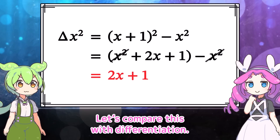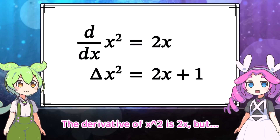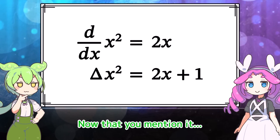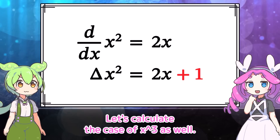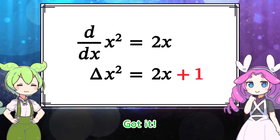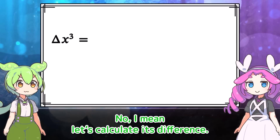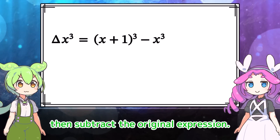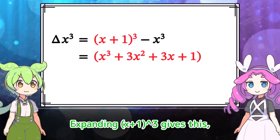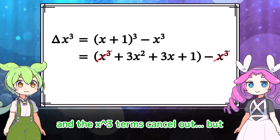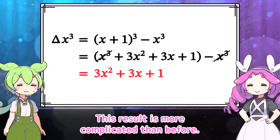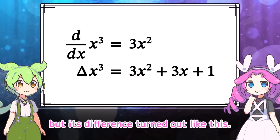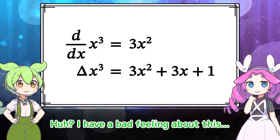That's an interesting result. Let's compare with differentiation: the derivative of x squared is 2x, but the difference of x squared is 2x plus 1. What exactly is this plus 1? We need a bit more information. Let's calculate the case of x cubed as well — just the difference, not the derivative. Adding 1 to x then subtracting the original expression, expanding x plus 1 cubed and canceling the x cubed terms leaves a lot of terms. This result is more complicated than before. It doesn't feel very clear.